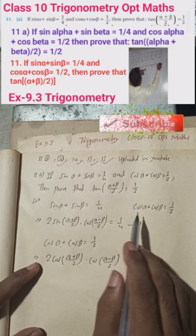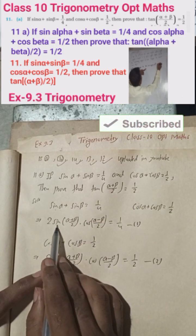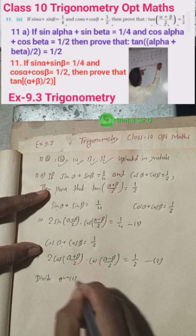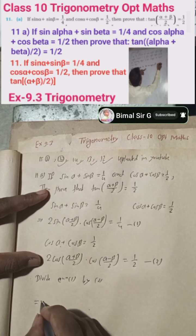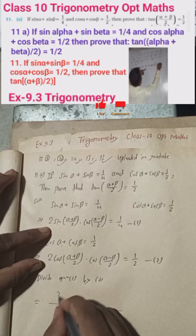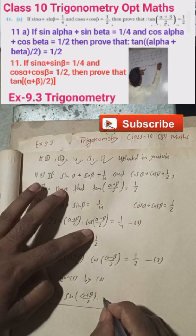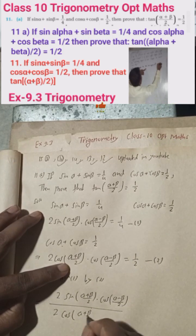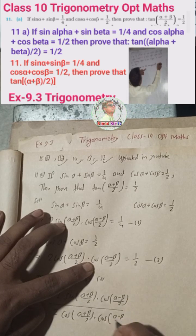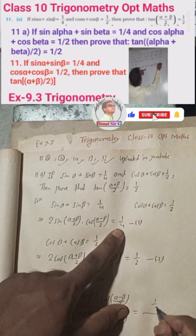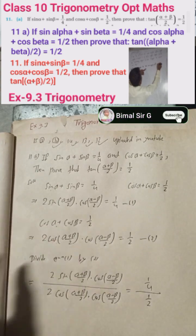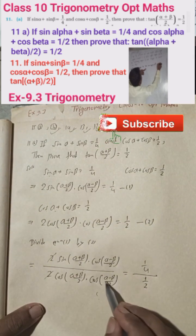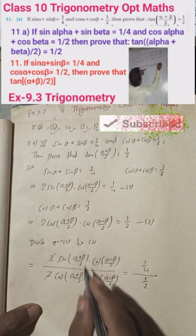Now we divide equation one by equation two. We need to prove tan of something, and since we have sin over cos, that will give us tan. Dividing: [2 sin((α+β)/2) · cos((α−β)/2)] / [2 cos((α+β)/2) · cos((α−β)/2)]. The two's cancel and the cos((α−β)/2) terms cancel, leaving sin/cos.